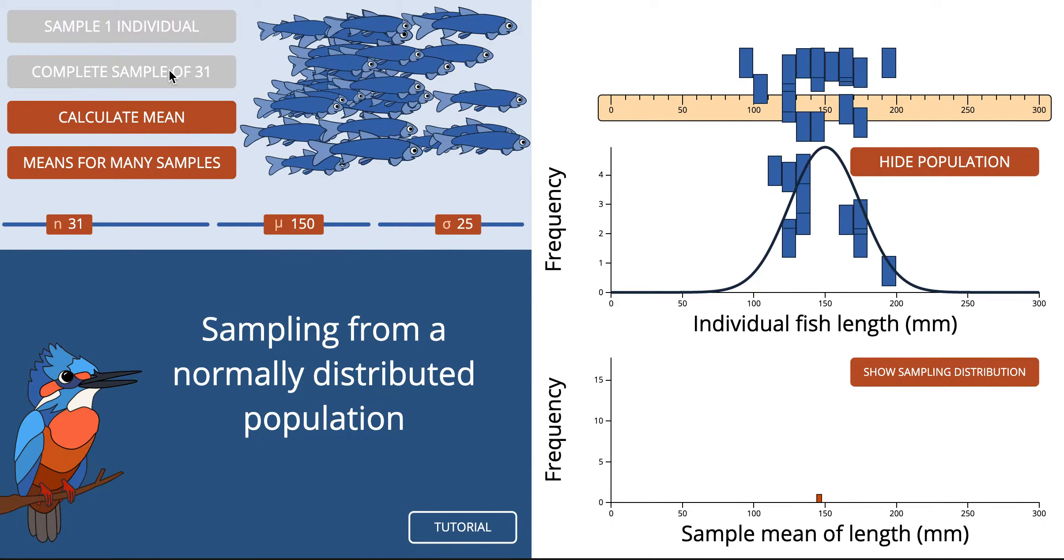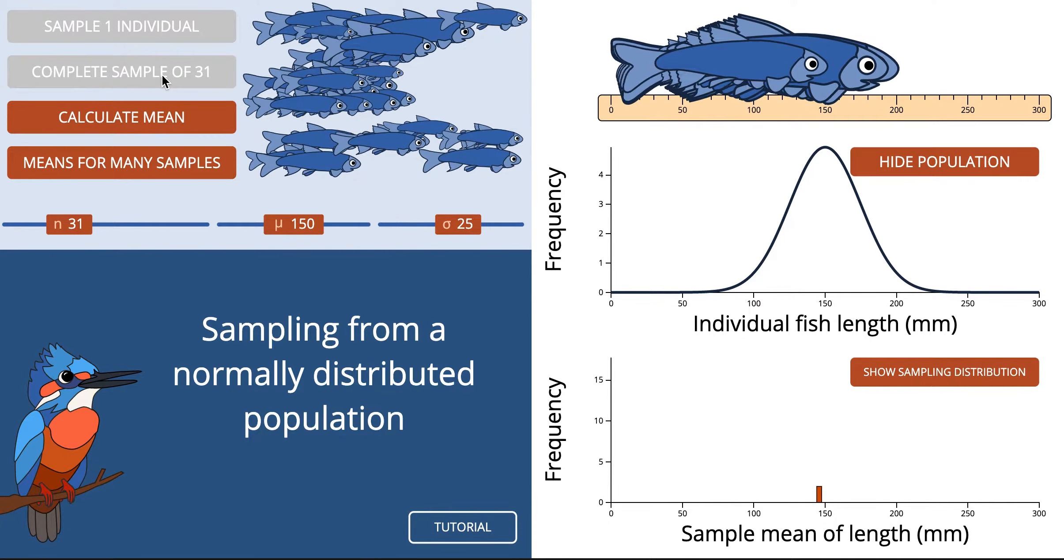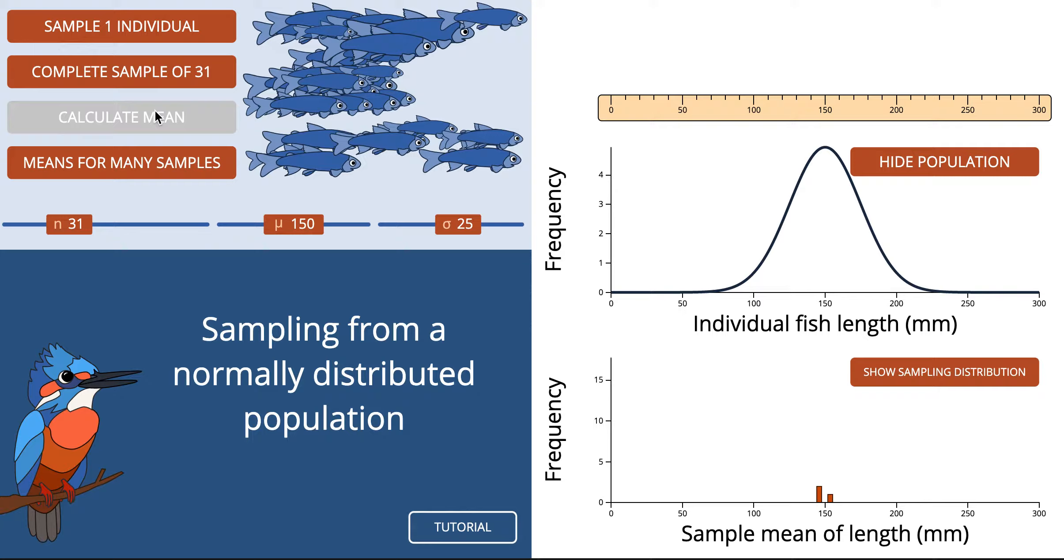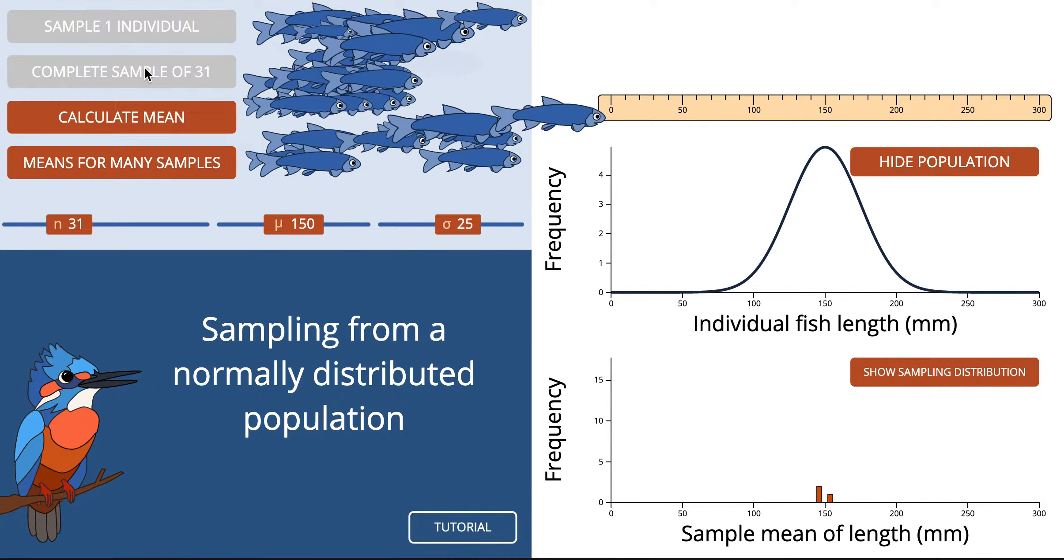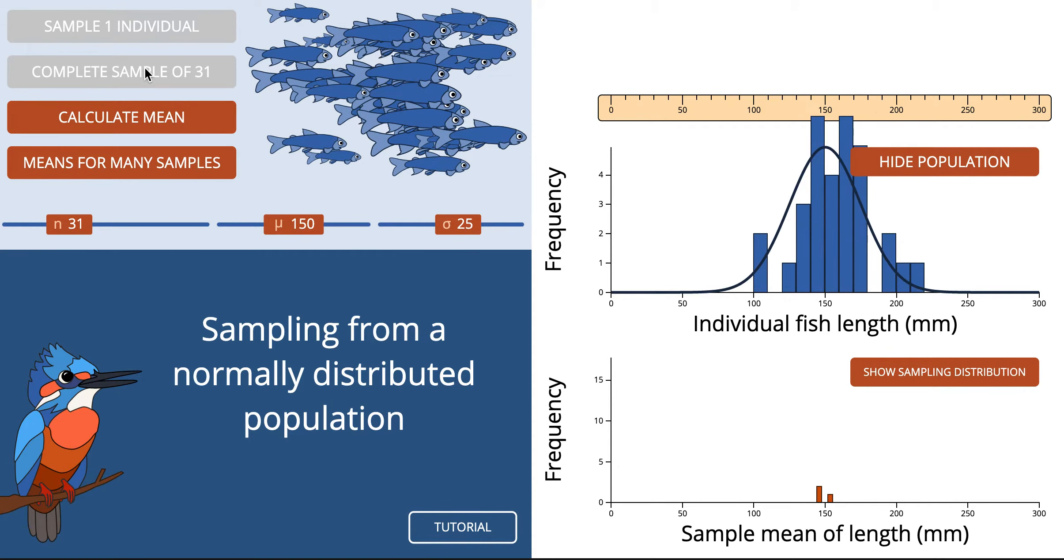And if we take another sample of 31 and calculate the mean for that sample of 31, again, it is so close to 150, in fact it was the same as before. Was it just lucky that we've got the same one? Well let's take another sample of 31 fish, that's three samples of 31 fish. Let's calculate the mean. So close to 150 again, so it looks like taking a sample of 31 fish and working out the mean of that sample gives us a pretty reliable estimate for the population mean.